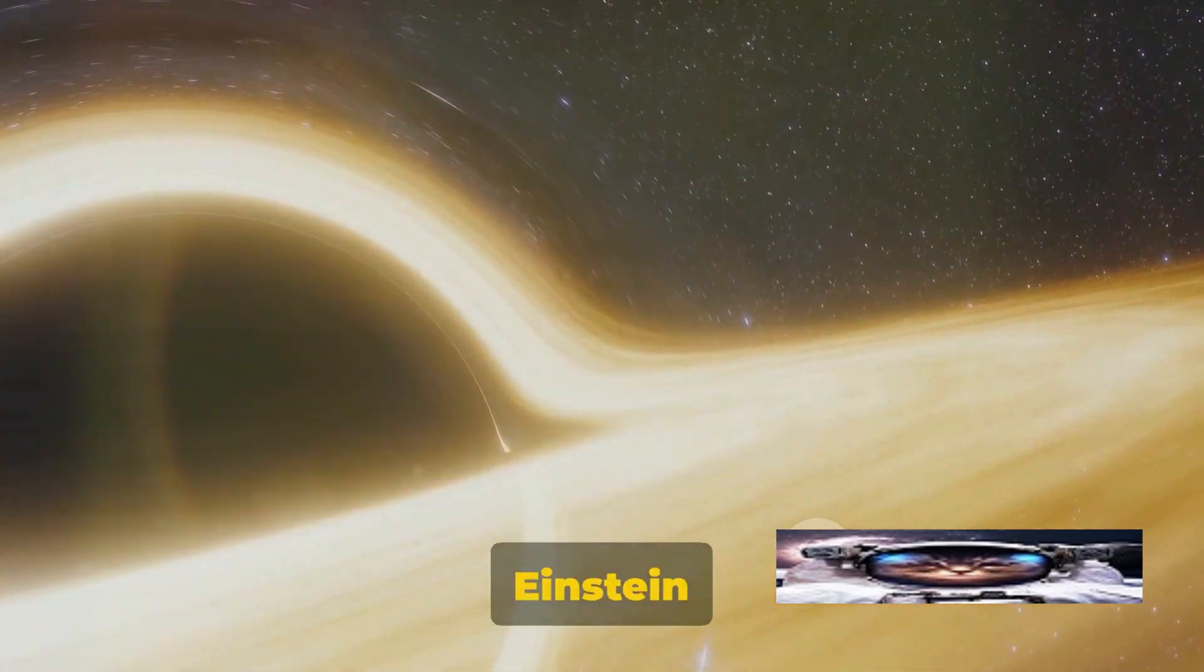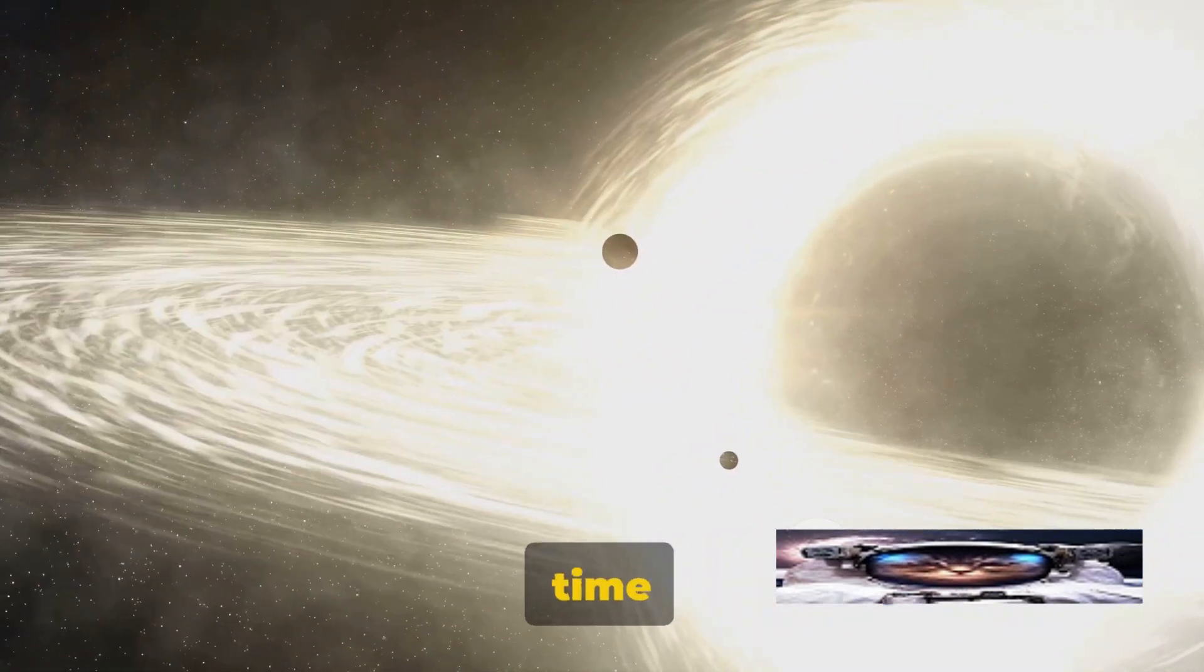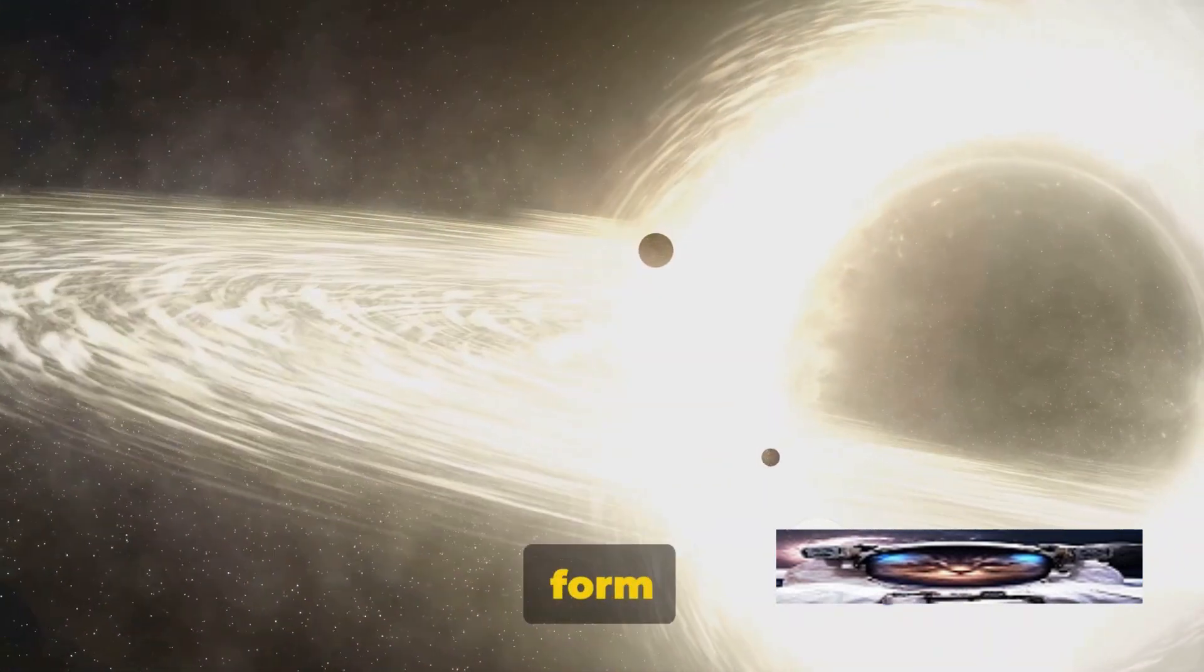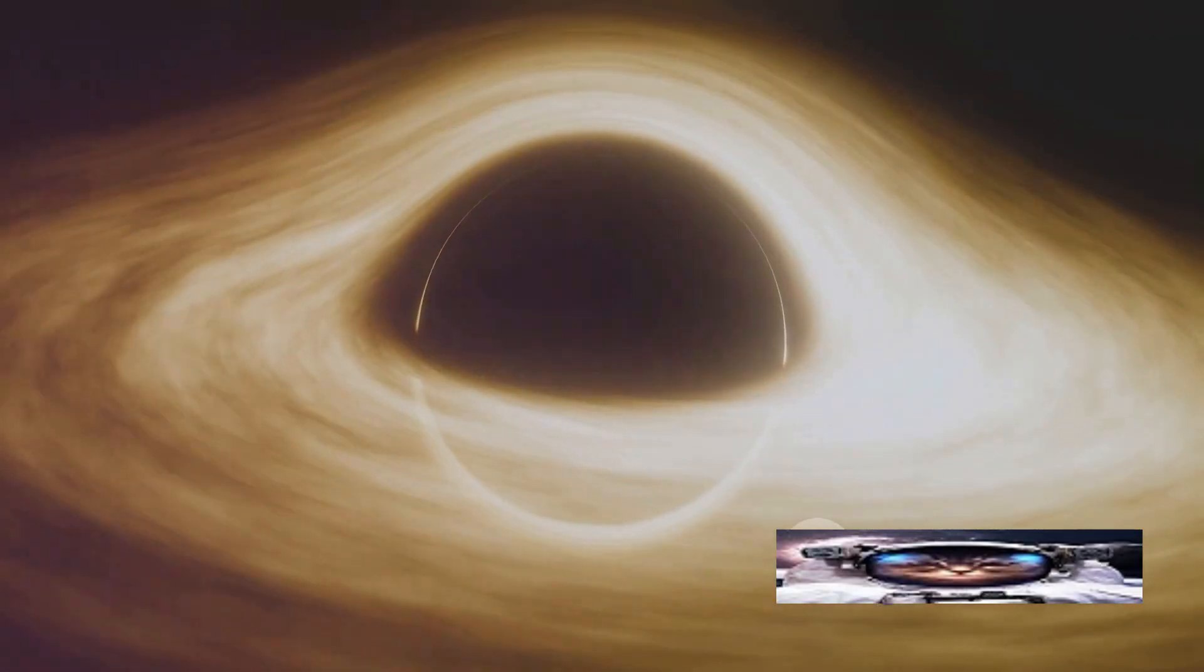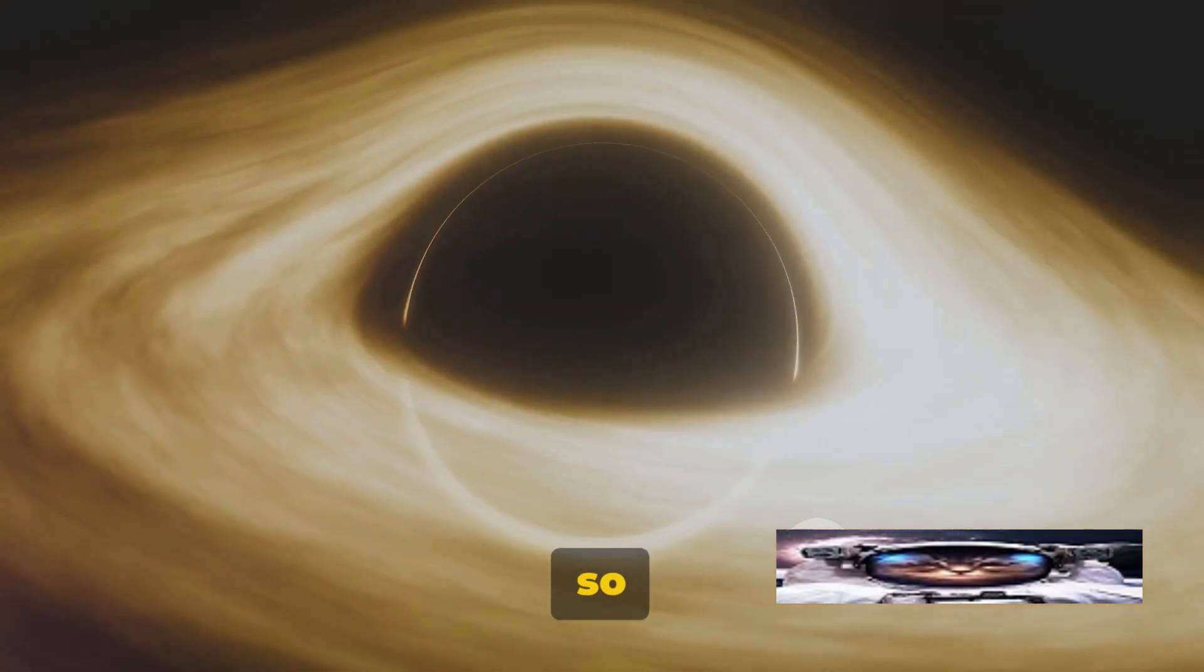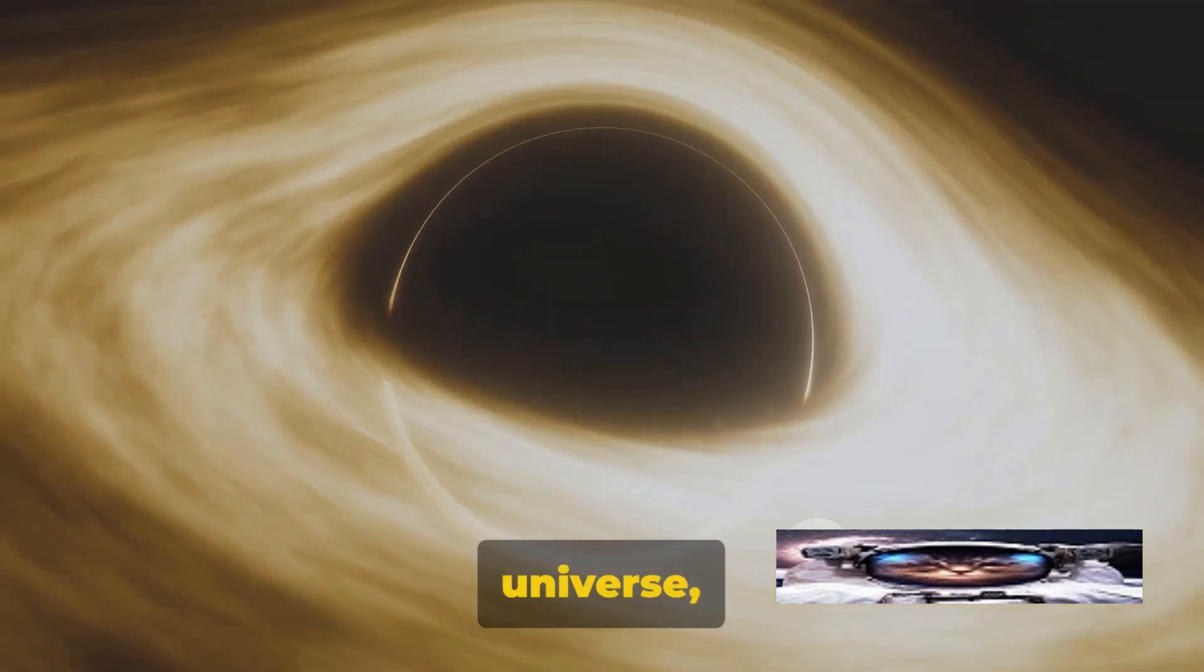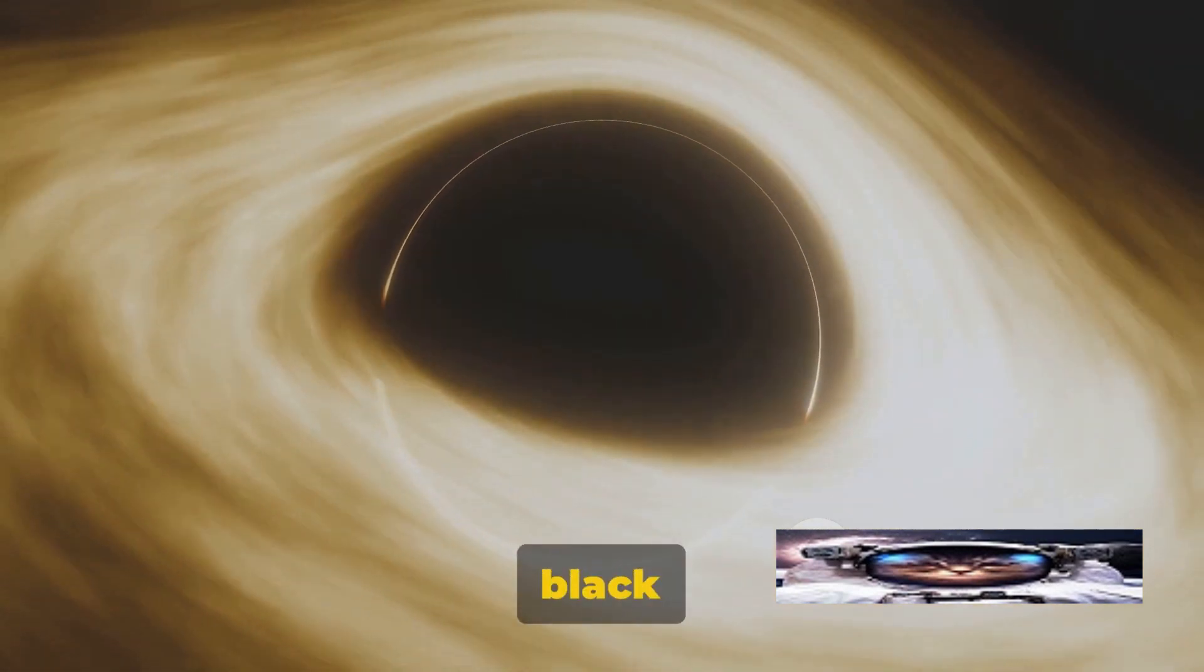In his equations, Einstein predicted that extreme mass could curve space and time so much that it would form a sinkhole from which nothing, not even light, could escape. This theoretical region where gravity is so strong that it warps the very fabric of the universe was what we now call a black hole.